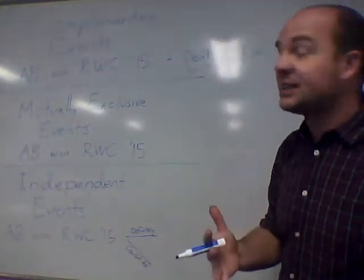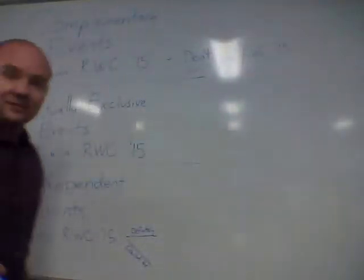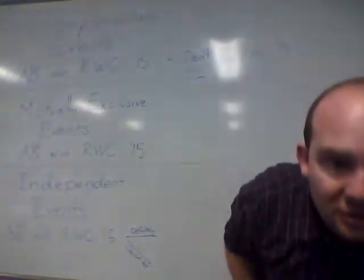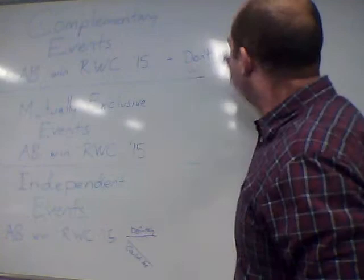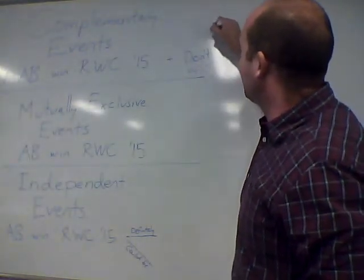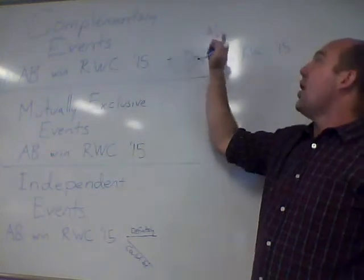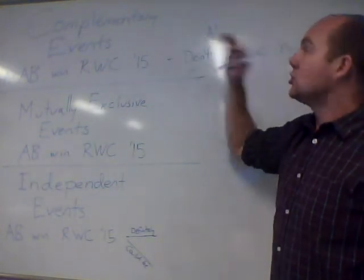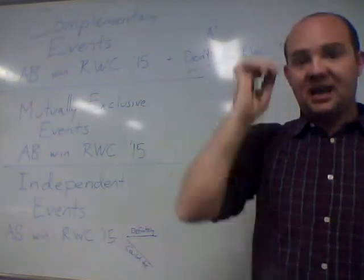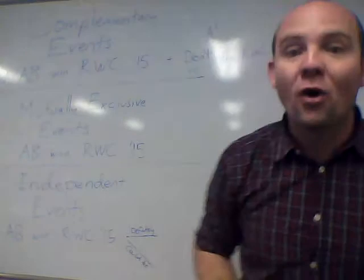Now if we were using a letter to stand for this event happening — I've written A equals there — then the complementary event has a special notation: we call this A-dash, and we know that means 'not A' — A is not happening. So when we've got those two probabilities, they will add up to one.